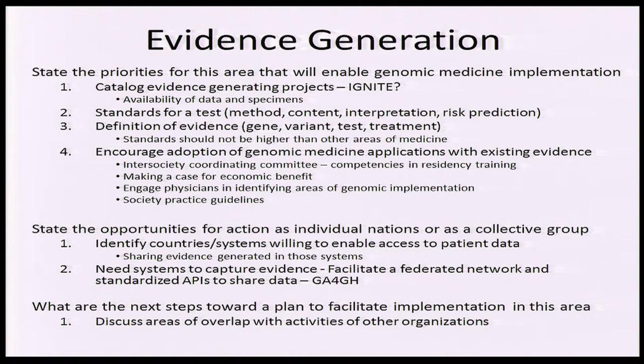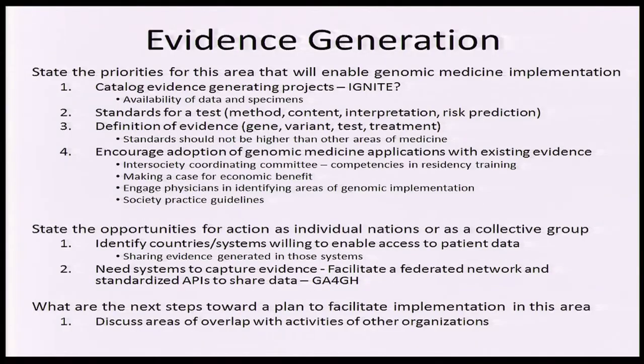One priority is to simply catalog evidence-generating projects that are out there today. Because if you want to build numbers and data, knowing that somebody else is doing the same thing is a way to help generate the evidence you need. We asked whether the Ignite Coordinating Center might serve as a center to catalog the different projects going on. It was also brought up whether to catalog the availability of not only data but specimens that might be shared across centers.